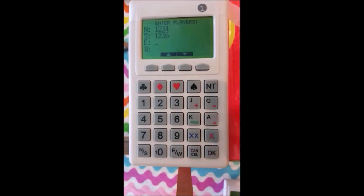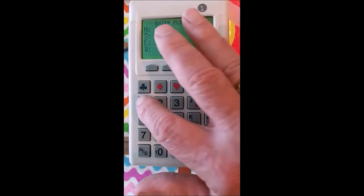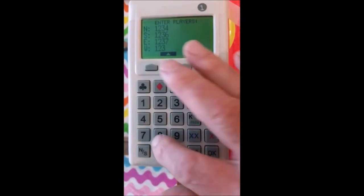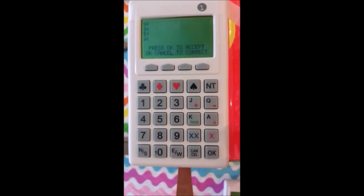Now it wants to know East, which is 1, 2, 3, 7. OK, and now it wants to know West, which is 1, 2, 3, 8.